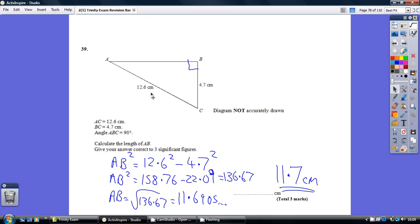So the hypotenuse, the bigger number first, so 12.6 squared, take away 4.7 squared. So square them, take them away. We get AB squared is 136.67.